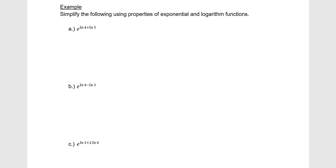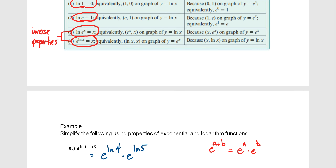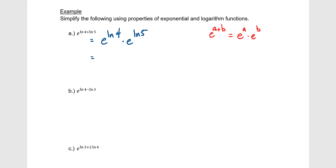Let's simplify using properties of exponents and logs. First: e to the (ln 4 + ln 5). We use the property that e^(a+b) = e^a times e^b, so this becomes e^(ln 4) times e^(ln 5). By the inverse property, e and ln cancel, and we're just left with 4 times 5, which simplifies to 20.